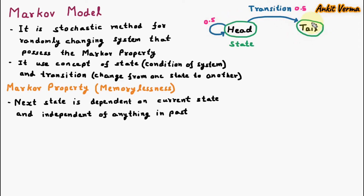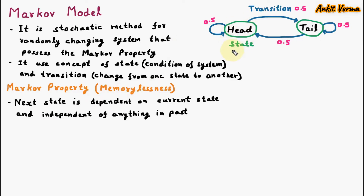In the same way, if we are on tail and we toss the coin, we can go back to head or we can also get tail again. So these are the two probabilities: 0.5 to get head and 0.5 to get tail. So this is the state transition diagram. The Markov Model follows a state transition diagram in which the randomly changing system follows the Markov Property — that is, the next state is dependent on the current state only. They don't consider the past state, so memory is not required. That's why it is also called Memory Lessness.